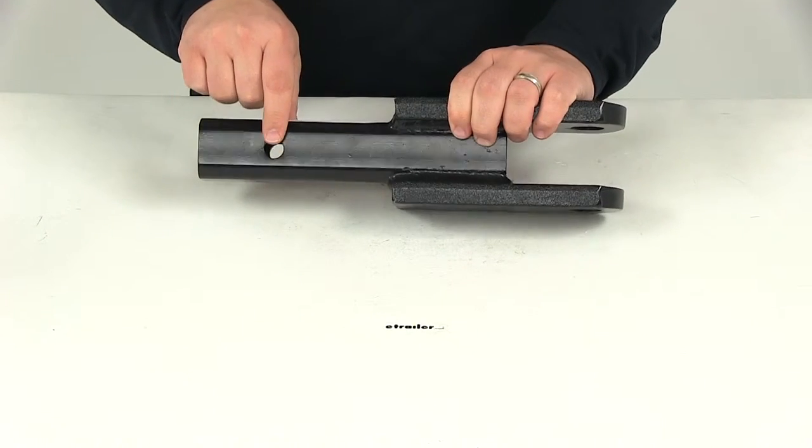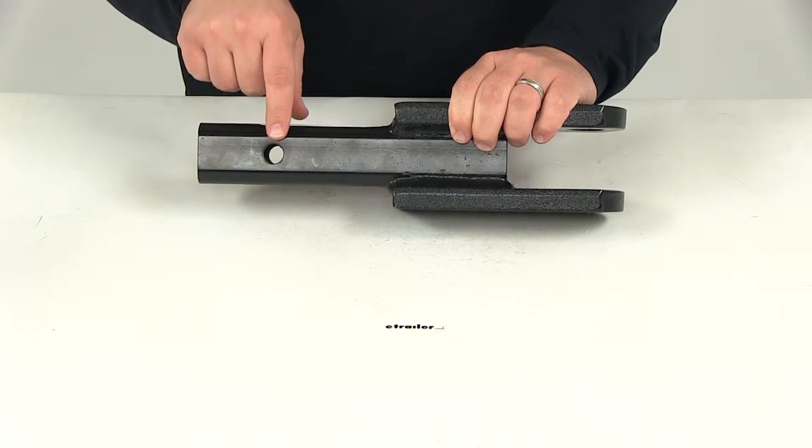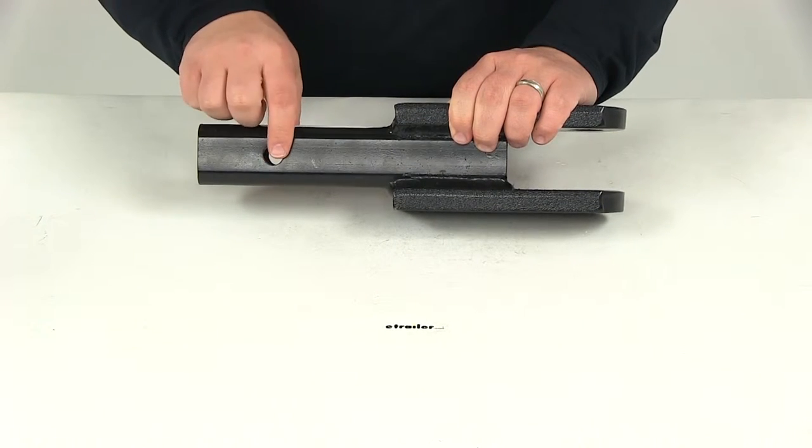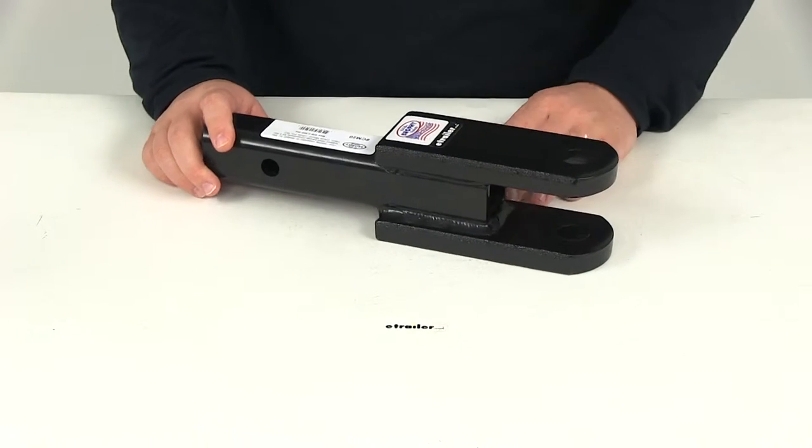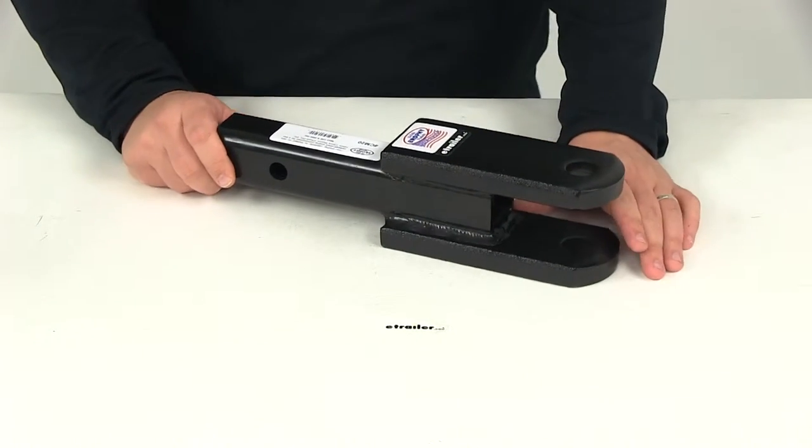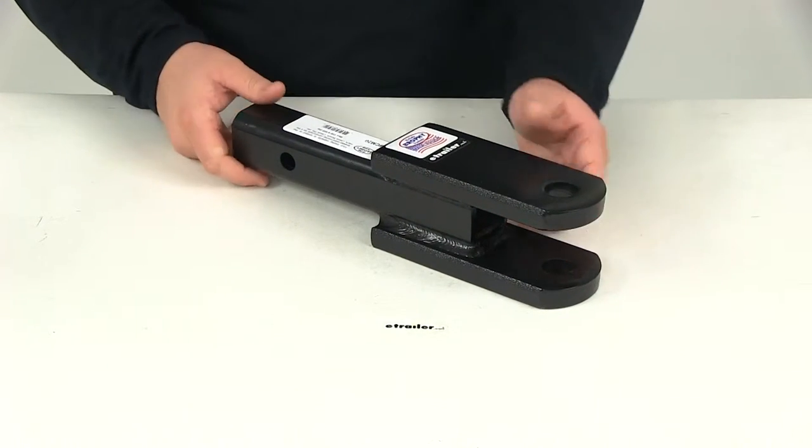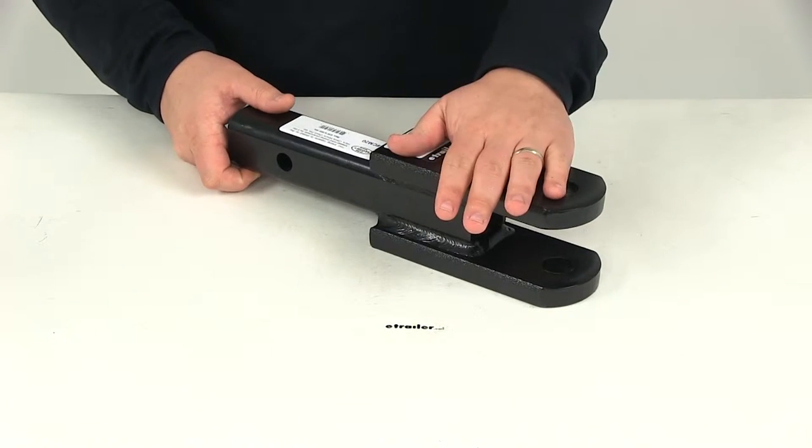Back here is going to be your standard 5/8-inch pinhole. This is going to use a hitch pin and clip or a hitch lock. That's sold separately. If you don't already have one, you can check some options here on our website. The one I'll be using for our demonstration today is going to be part number PC3. This product is made in the USA.